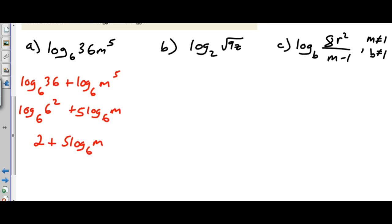For this guy right here, since this is all in one radical, I'm going to first write this as an exponent: log base 2 of 9z to the 1 half. Now I can use my power rule and break the 1 half down, so I'm going to have a half times log base 2 of 9z.